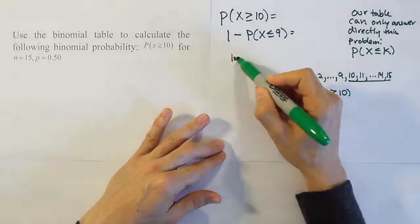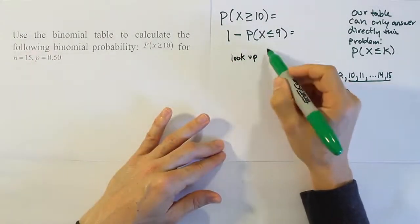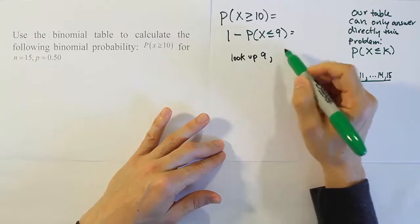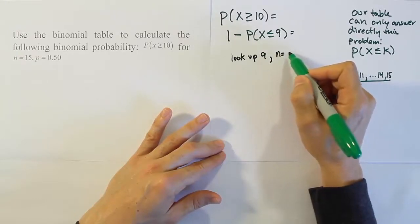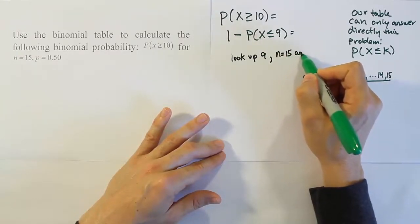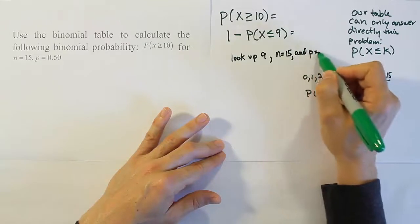Let's look up k is equal to 9 under n is equal to 15 and p is equal to 0.4.